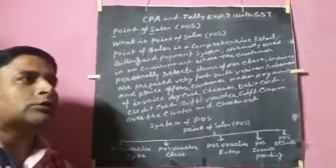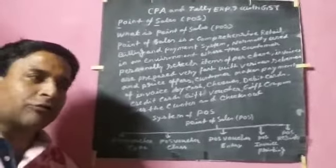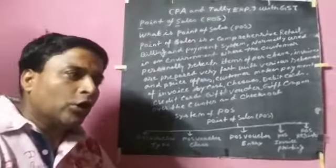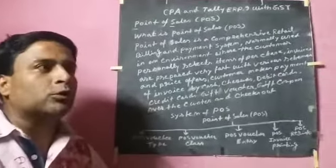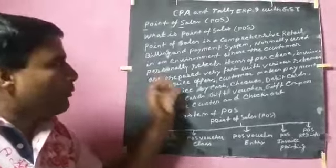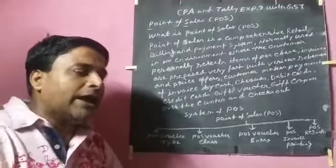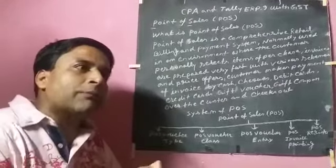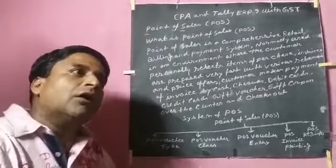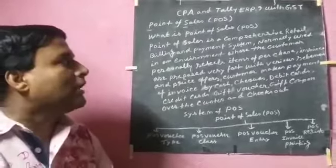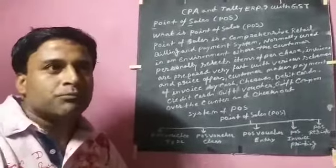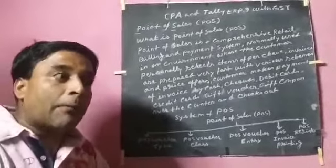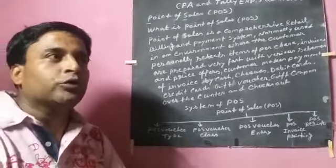Normally a sale is either a cash payment, a check payment, or a credit card payment. But at the Point of Sale, when we go to a shopping mall or a store, we get the opportunity to personally select the items we want and then go to a counter to pay.